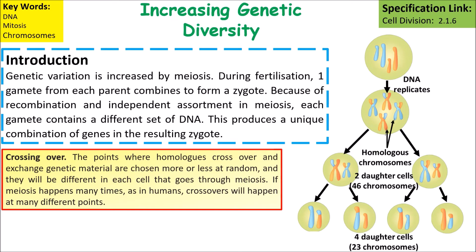Genetic variation is increased by meiosis. During fertilisation, one gamete from each parent combines to form a zygote. Because of recombination and independent assortment in meiosis, each gamete contains a different set of DNA, producing a unique combination of genes in the resulting zygote.